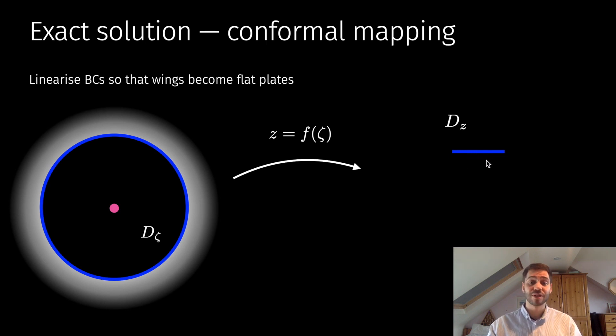In order to tackle this problem, we use conformal mappings. Because of the small amplitude assumption, we can model the wings as flat plates. In the physical domain, the wing can just be modeled as this blue slit, and we want to construct a mapping from a nice circular domain to this blue slit domain. In this simply connected case, this is very straightforward—it's just the Joukowski map that is well known amongst fluid dynamicists.